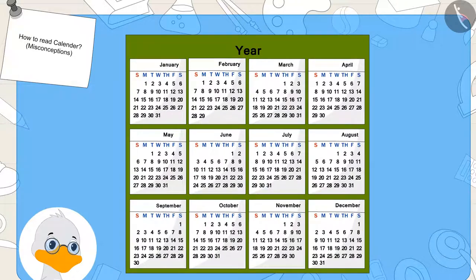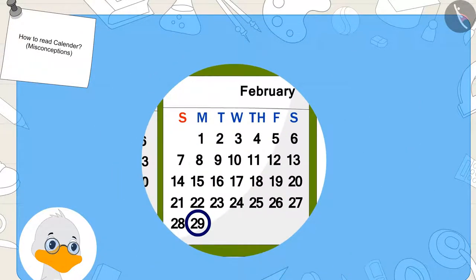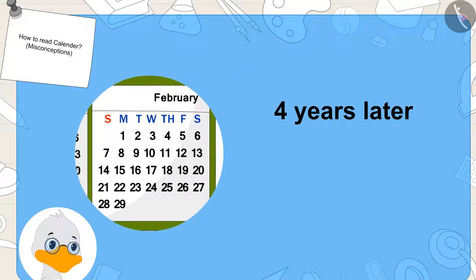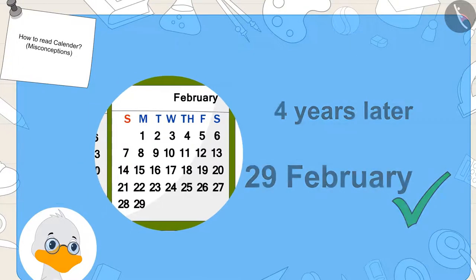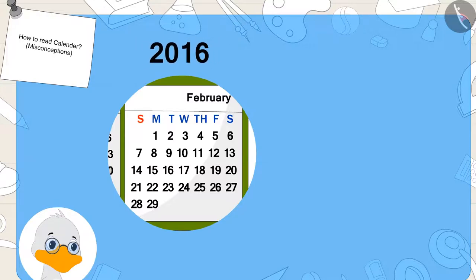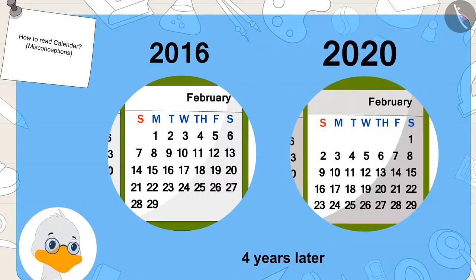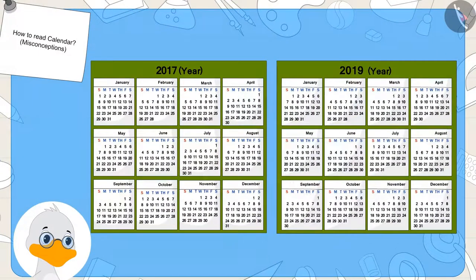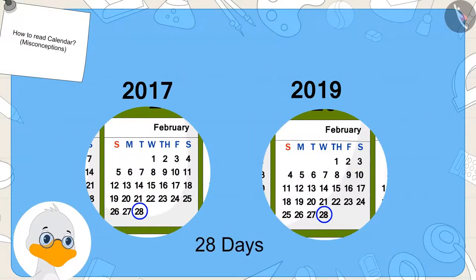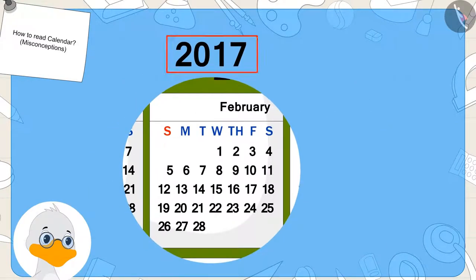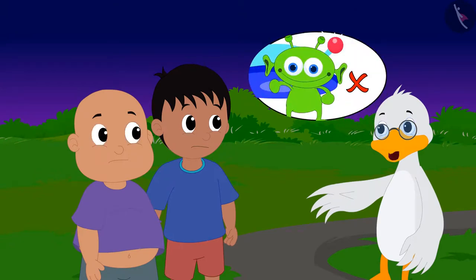So there is a month with 29 days in February after every four years. Last time was in the year 2016, and the next year with 29 days in February would be 2020. In most years, February has only 28 days, and this year is also one of those years when there are only 28 days in February. Therefore, Jeev did not come to meet them.